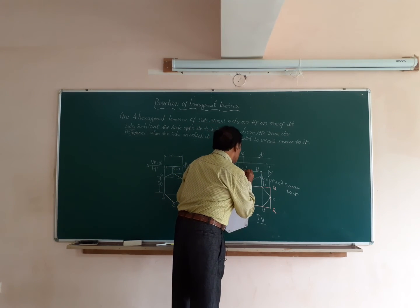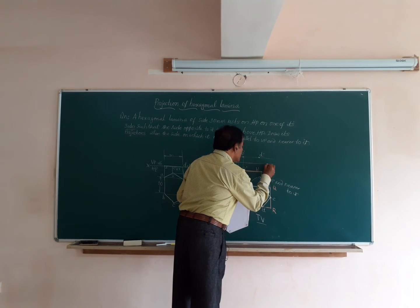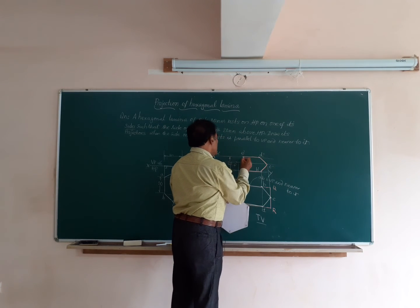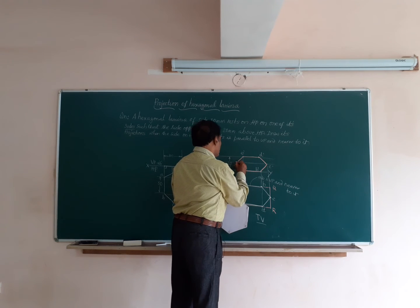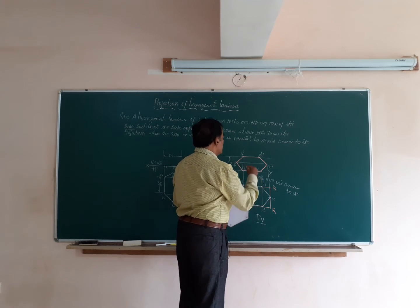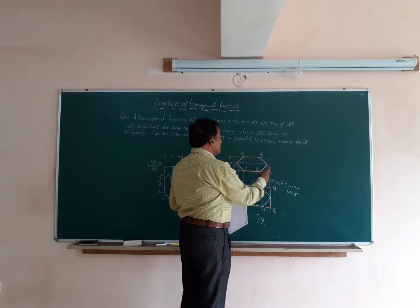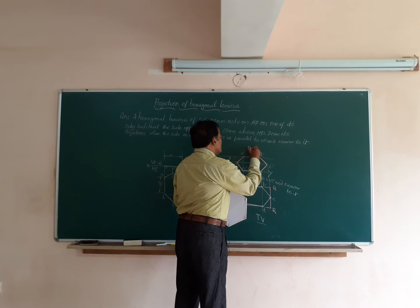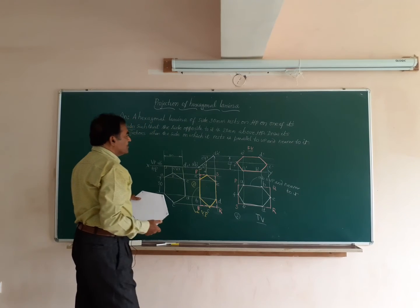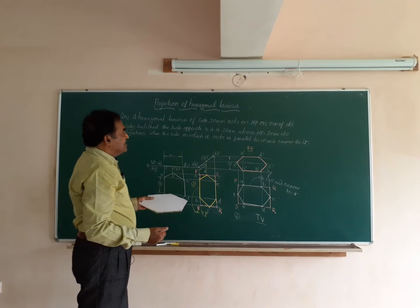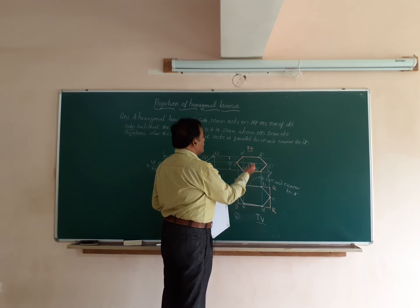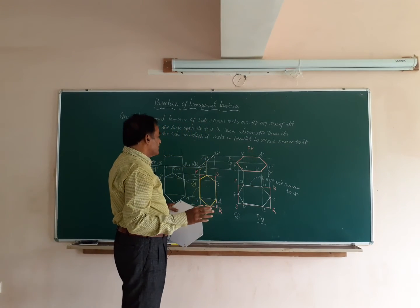Join A to B, B to C, C to D, D to E, E to F, and F dash to A dash. The figure A dash B dash C dash D dash E dash F dash is the final front view of the lamina. We have the complete solution — the lamina appears as a distorted hexagon in both the top view and front view.